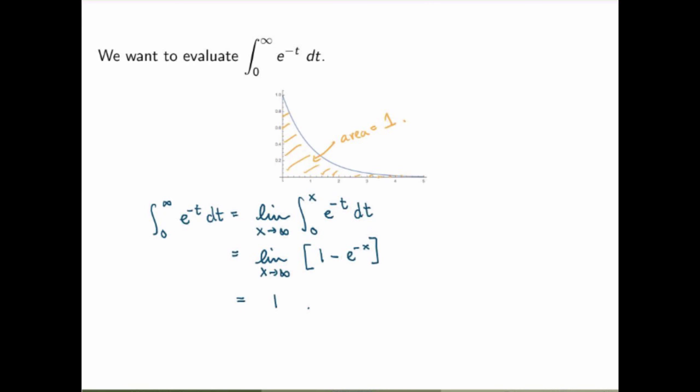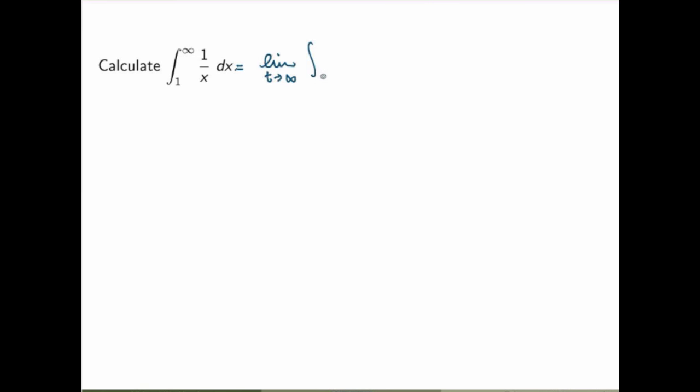From the geometric point of view, what that means is that the area under this exponential curve, even if you go all the way to infinity, remains finite. The area is exactly equal to 1. Let's do a second example. Suppose you want to calculate the integral between 1 and infinity of the function 1 over x. We can do that — this is the limit as t goes to infinity of the definite integral between 1 and t of 1 over x dx. We can certainly integrate this function.